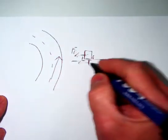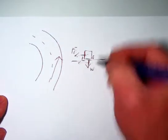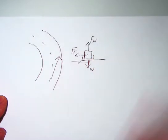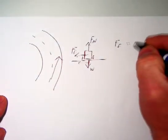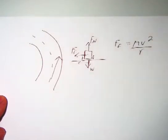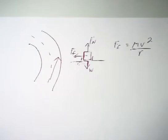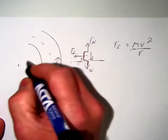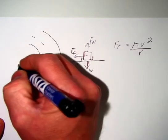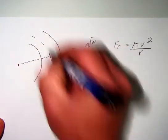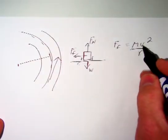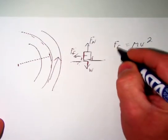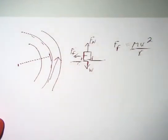Weight in this case was straight down, and our normal force was in opposition to our weight, because our car is not flying into the air and it's not crashing through the ground. So we know our force of friction is equal to mv² divided by radius, where velocity is the tangential velocity of the car, and r is the radius of the curve — the imaginary circle that outlines the curve.